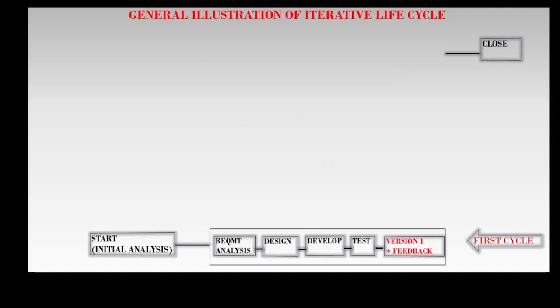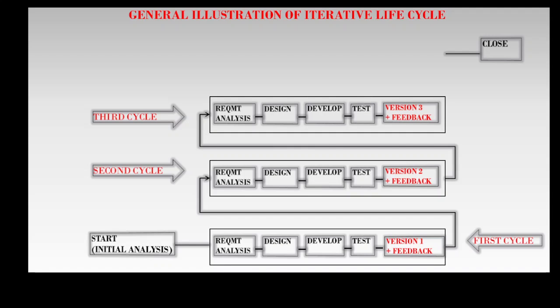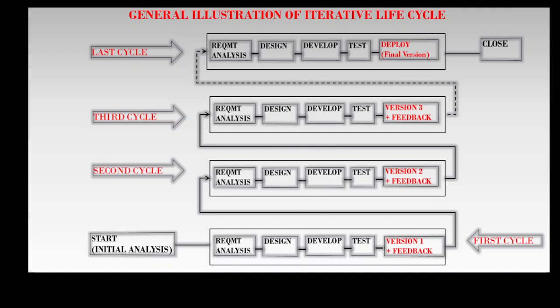In the first cycle, the first product version is created but not deployed, and feedback is received. This feedback is used to modify the first product version in the second cycle, and new features could also be developed to create a second product version, which is not deployed and feedback is received. Likewise, in the third cycle, the third product version is created and feedback is received. The phases are repeated in subsequent cycles up to the last cycle, when the final or desired product version is created, accepted, and delivered to the customer.